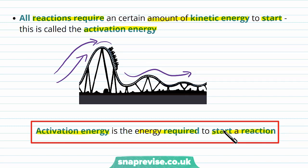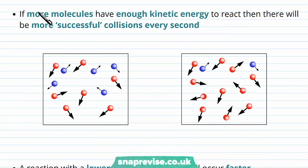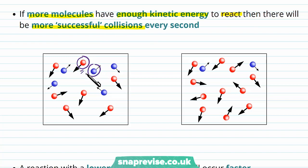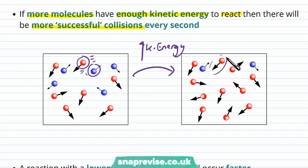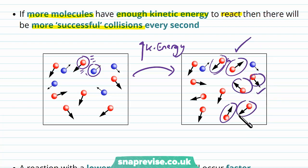Activation energy is almost like a roller coaster needing that push of energy to get over a hill — if you don't push it hard enough, it won't make it. If you give more molecules kinetic energy, more of them will have enough energy to react, so there'll be more successful collisions. These molecules are colliding randomly, but if you increase their kinetic energy, more of them have enough energy for the reaction to occur successfully.